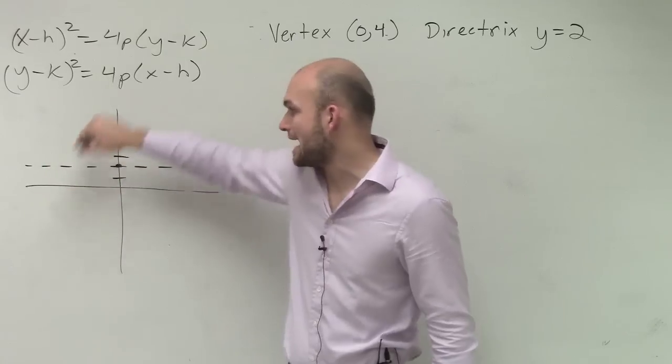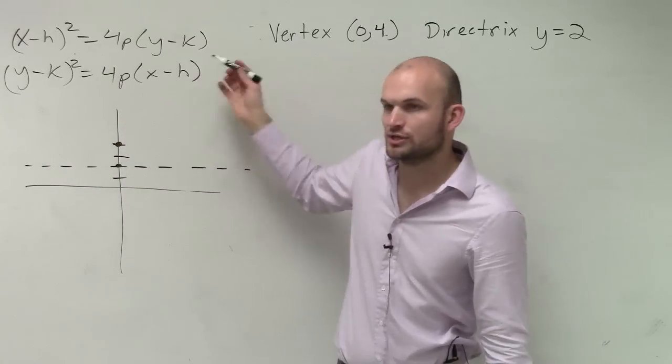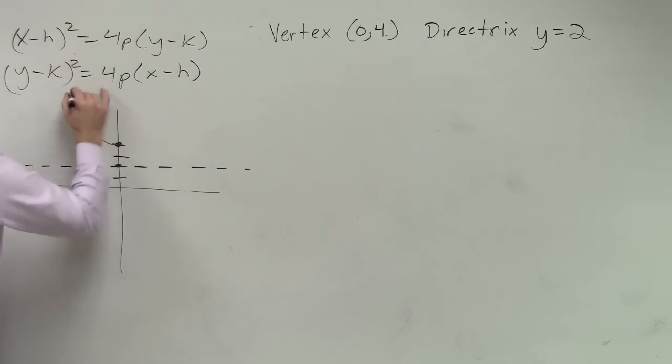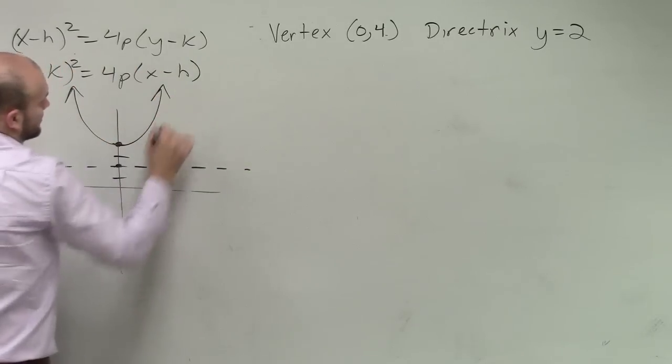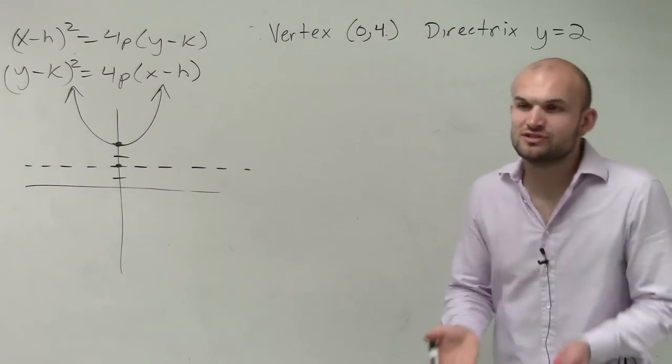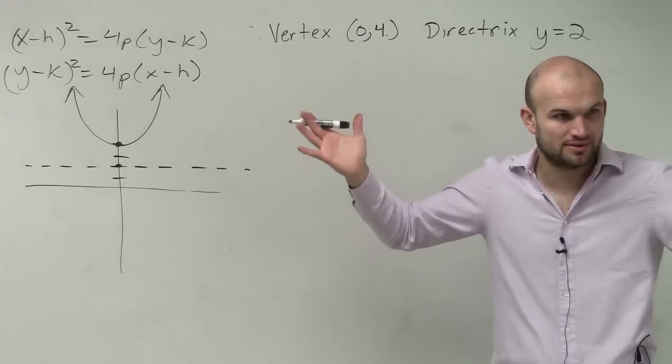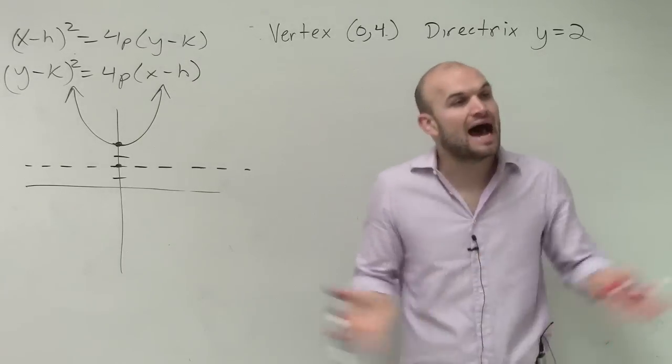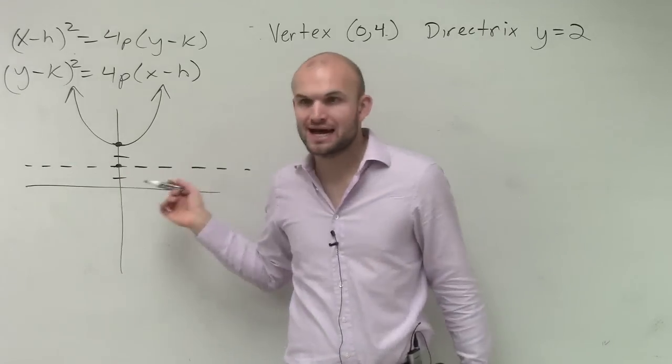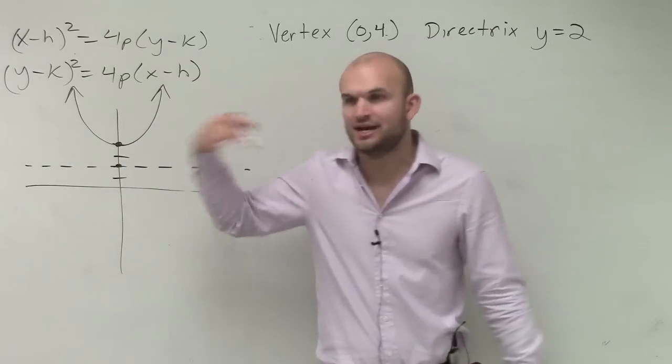So we know our graph can't open down and if it opens to the right or to the left, then it can cross the directrix as well. So the only possible point for us to do is have and to say that, oh, my graph has to open up. Right? It's always going to go in the opposite direction of your directrix. And if your directrix is horizontal, then you know your graph has to open up. It can't open left or right.